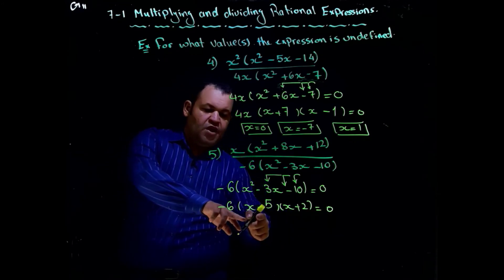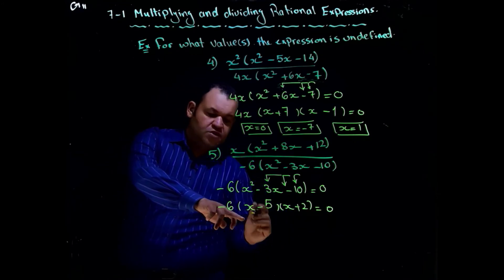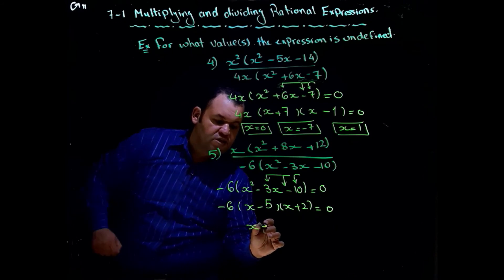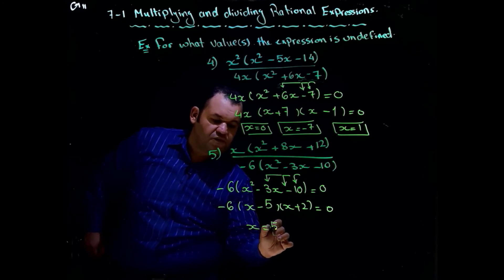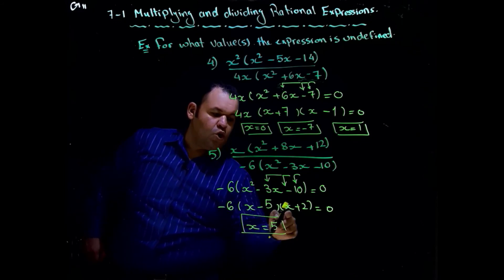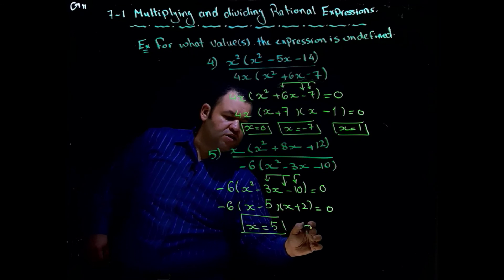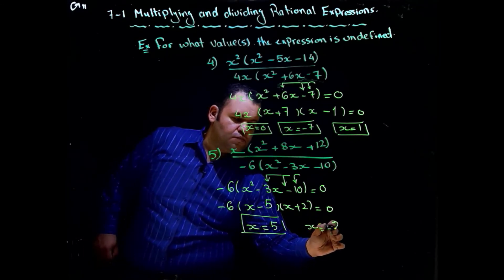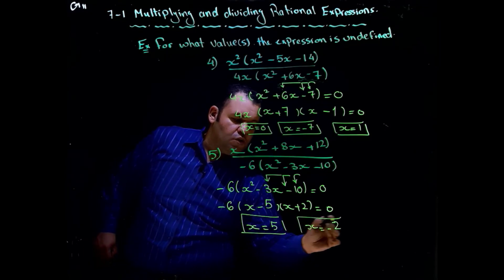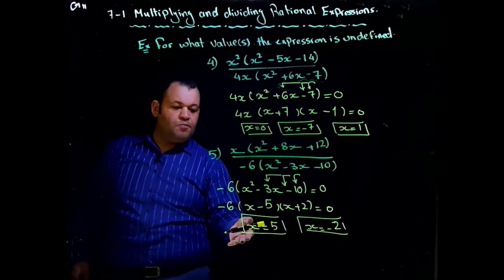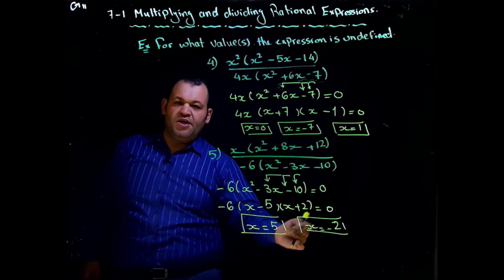From the factored denominator, we get x equals 5 and x equals negative two. So the values of the variable which make the expression undefined are positive five and negative two.